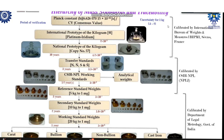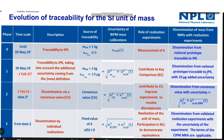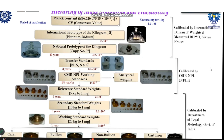Slowly the IPK will be eliminated from the traceability chart when we go to the third phase — the last phase — where dissemination will be by individual realizations. Individual realization means the Kibble balance or XRCD realization methods which NMIs are developing. In phase three, any country having a realization method can provide traceability, and at the apex level we are now getting the value from the consensus value.